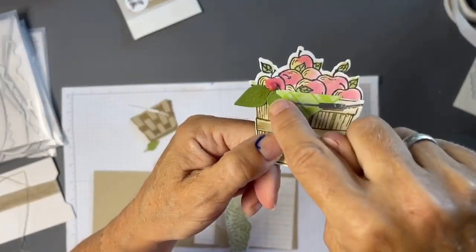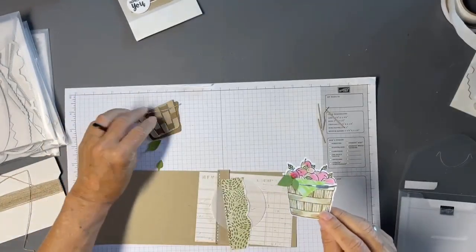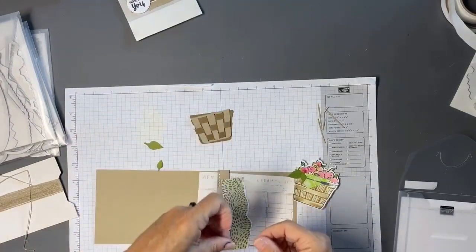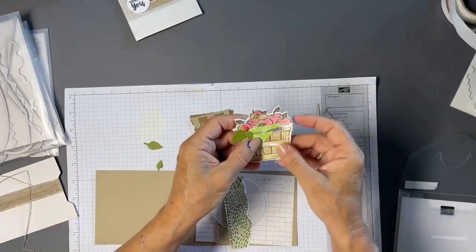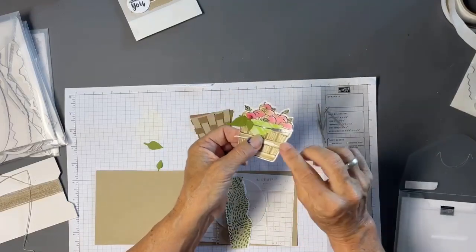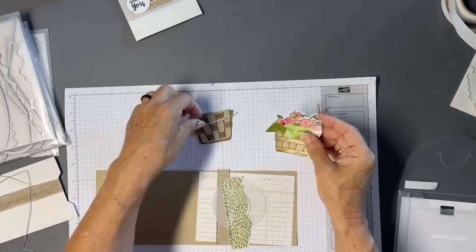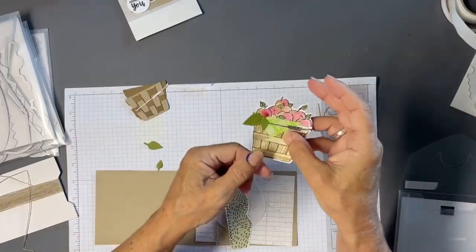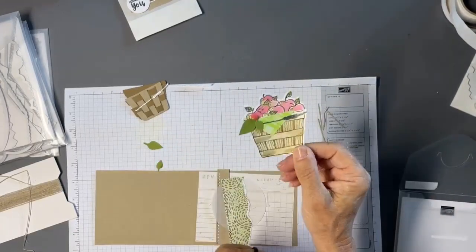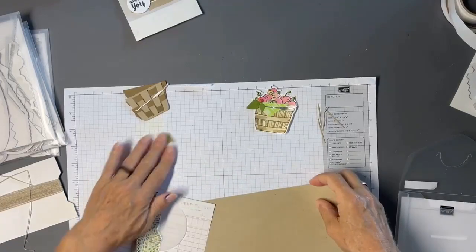And little tip for you, the reason why these leaves are here is this handle actually works on the basket, but this handle is not necessarily the right size for the stamped image if that makes sense. It kind of lays just a little bit funny, so the leaves are kind of hiding that little short end. So there's always a way to make everything work.